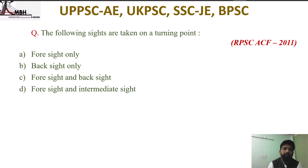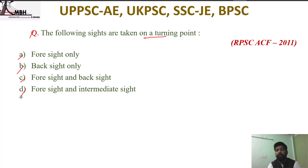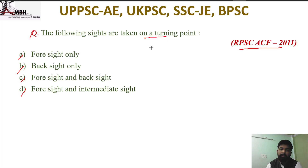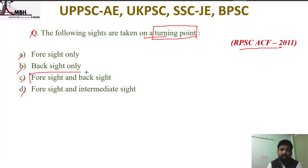Next question from RPSC CF 2011: the following readings are taken on a turning point — options are foresight only, backsight only, foresight and backsight, or foresight and intermediate sight. A turning point or change point has both foresight and backsight taken. Option C is correct.